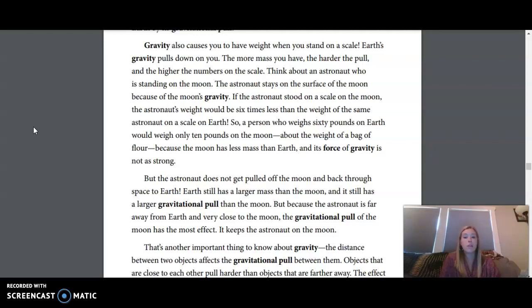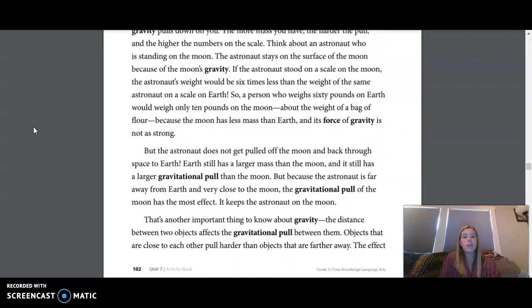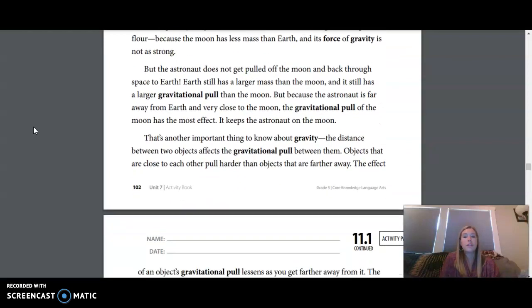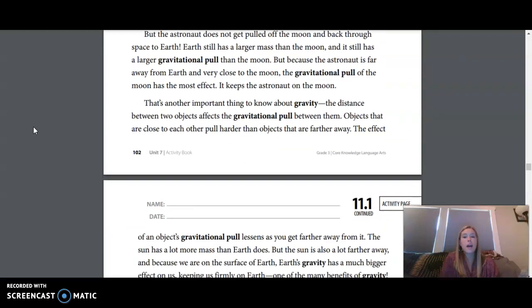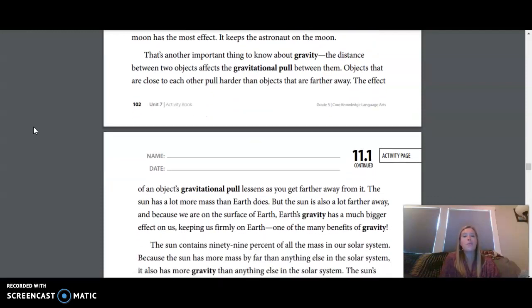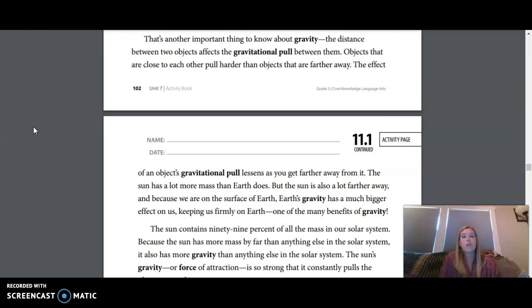So a person who weighs 60 pounds on Earth would weigh only 10 pounds on the Moon, about the weight of a bag of flour, because the Moon has less mass than Earth and its force of gravity is not as strong. But the astronaut does not get pulled off the Moon and back through space to Earth. Earth still has a larger mass than the Moon and it still has a larger gravitational pull than the Moon. But because the astronaut is far away from Earth and very close to the Moon, the gravitational pull of the Moon has the most effect. It keeps the astronaut on the Moon.